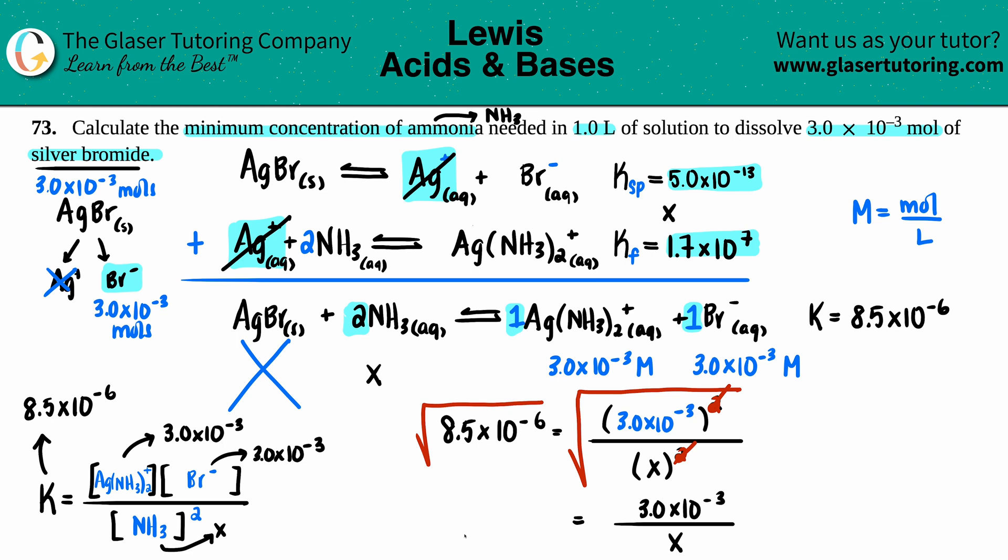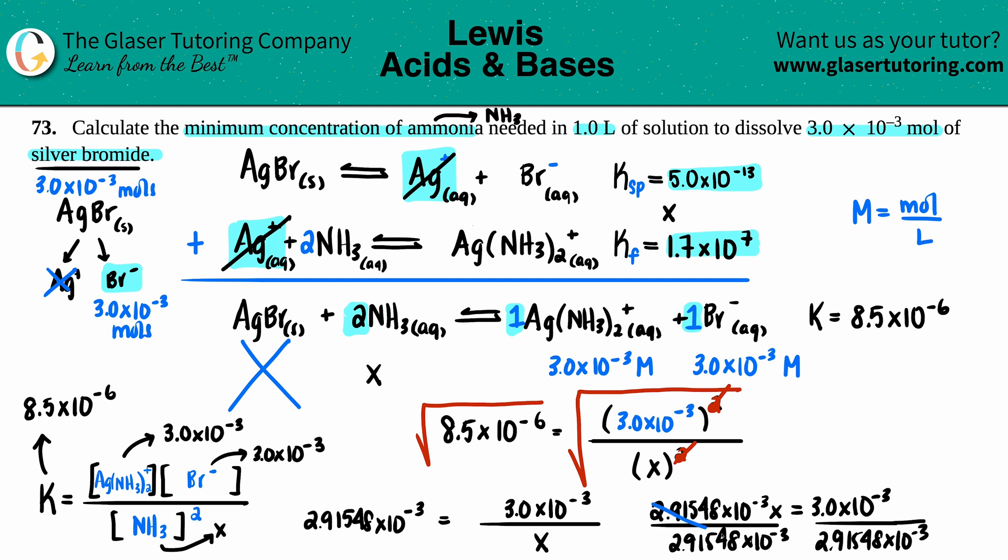I get 2.91548 times 10 to the negative third. I'm just going to bring this over a little bit just so that we have a little bit of room. Cross multiply: 2.91548 times 10 to the negative third x equals 3.0 times 10 to the negative third. Let's just get rid of that value and then you have x by itself. 2.91548 times 10 to the negative third on both sides. This canceled. We're just left with x equals, which I'm just going to put up here.